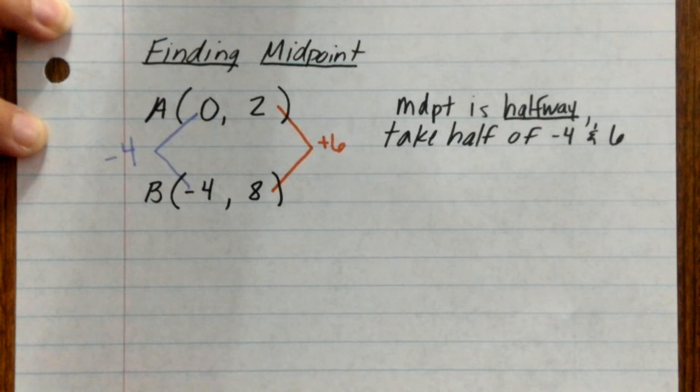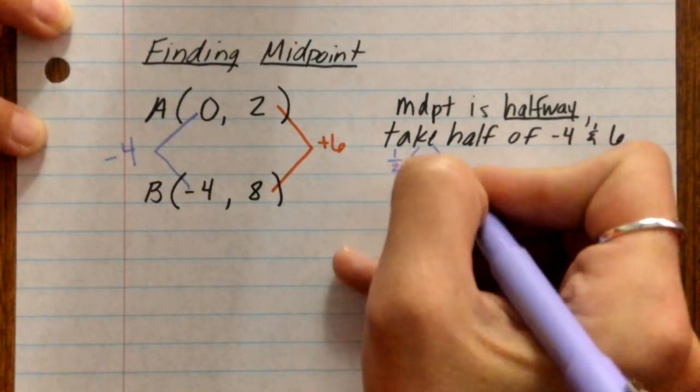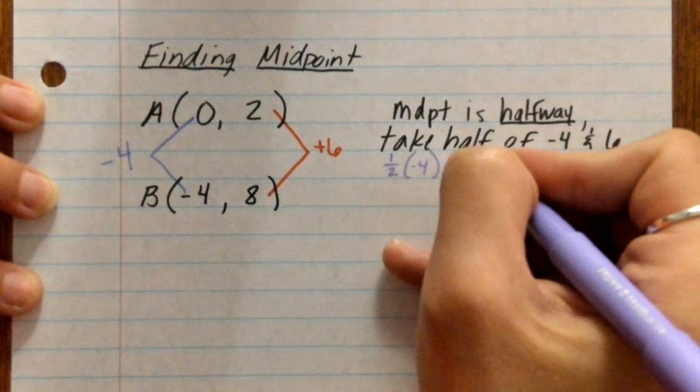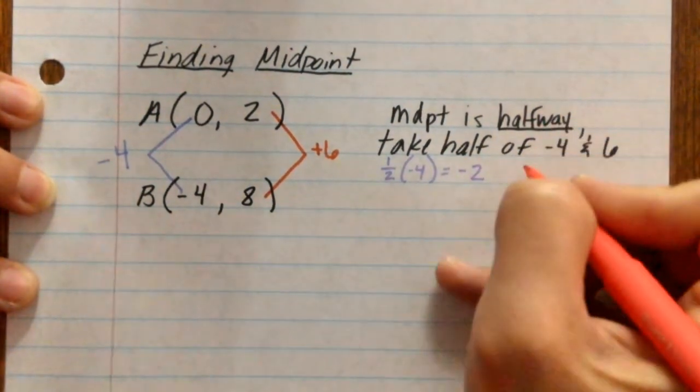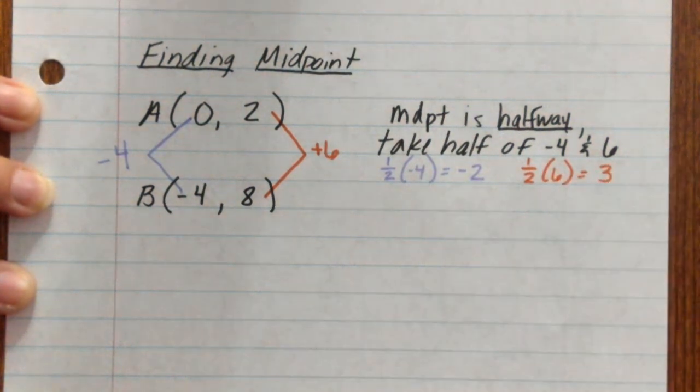So what this looks like here, we're going to take one half of negative 4 and we're going to come out with negative 2. We're going to take one half of that 6 and we're going to come out with a positive 3.